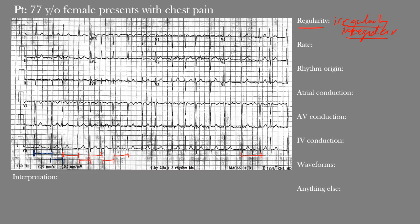The next step is the heart rate. Because we have an irregular rhythm, we estimate the heart rate by counting the QRS complexes across the EKG and multiplying by six, since the entire EKG represents 10 seconds. Counting across: 1, 2, 3, 4, 5, 6, 7, 8, 9, 10, 11, 12, 13, 14, 15, 16, 17, 18, 19 — there are 19 QRS complexes. 19 times 6 is 114 beats per minute — above 100, above our adult normal range — so this is a tachycardic rhythm.